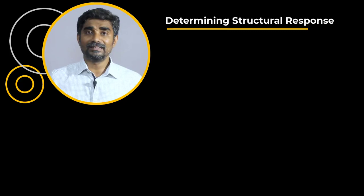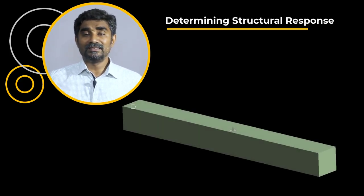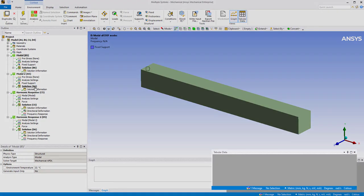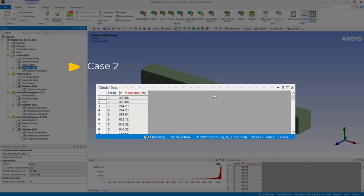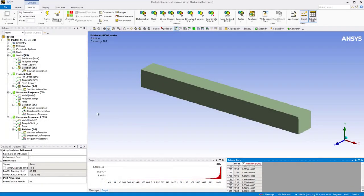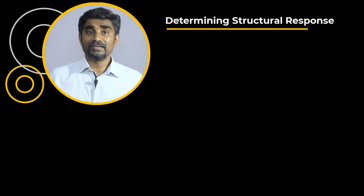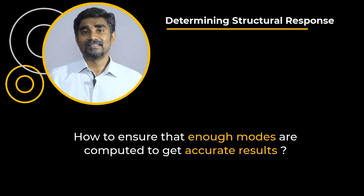Let's understand this by considering a simple example of a cantilever beam that is experiencing harmonic loading at one of its ends. In the first case, the modes extracted are far less than the number of nodal DOFs, while in the second case, the extracted modes are approximately equal to the number of nodal DOFs. However, if we observe the deformation results of both cases, we notice that the results are quite similar. The question which arises now is how to ensure that enough modes are computed to get accurate results.